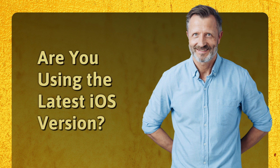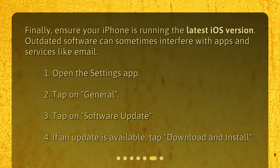Finally, ensure your iPhone is running the latest iOS version. Outdated software can sometimes interfere with apps and services like email. Open the Settings app, tap on General, then tap on Software Update. If an update is available, tap Download and Install.